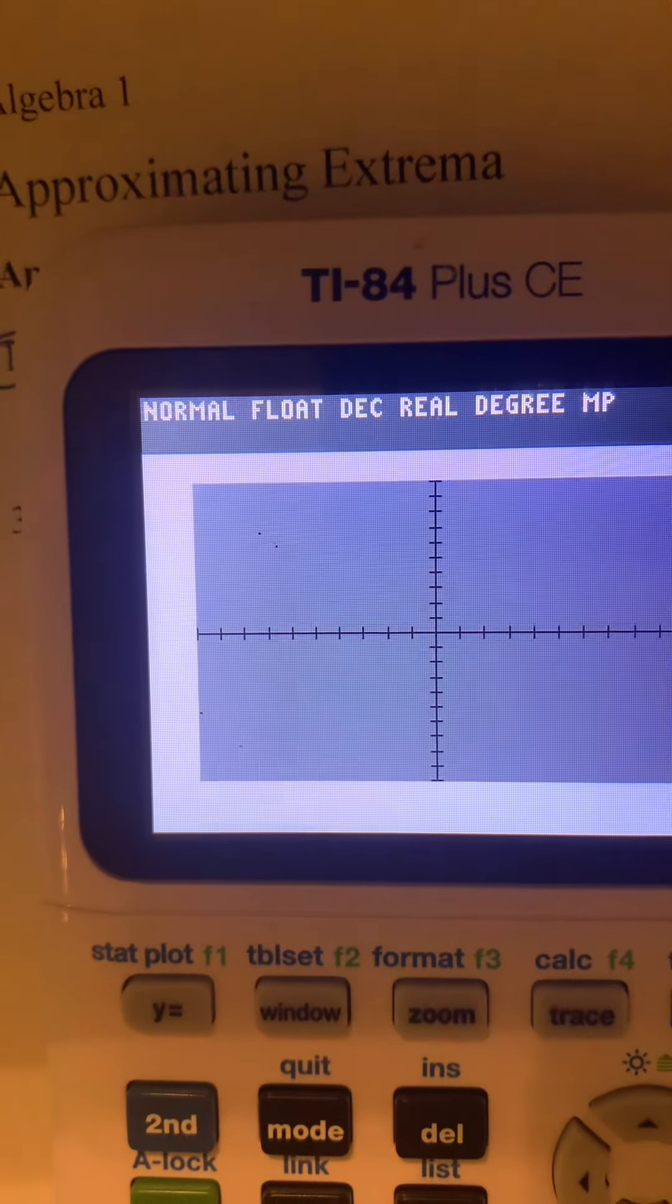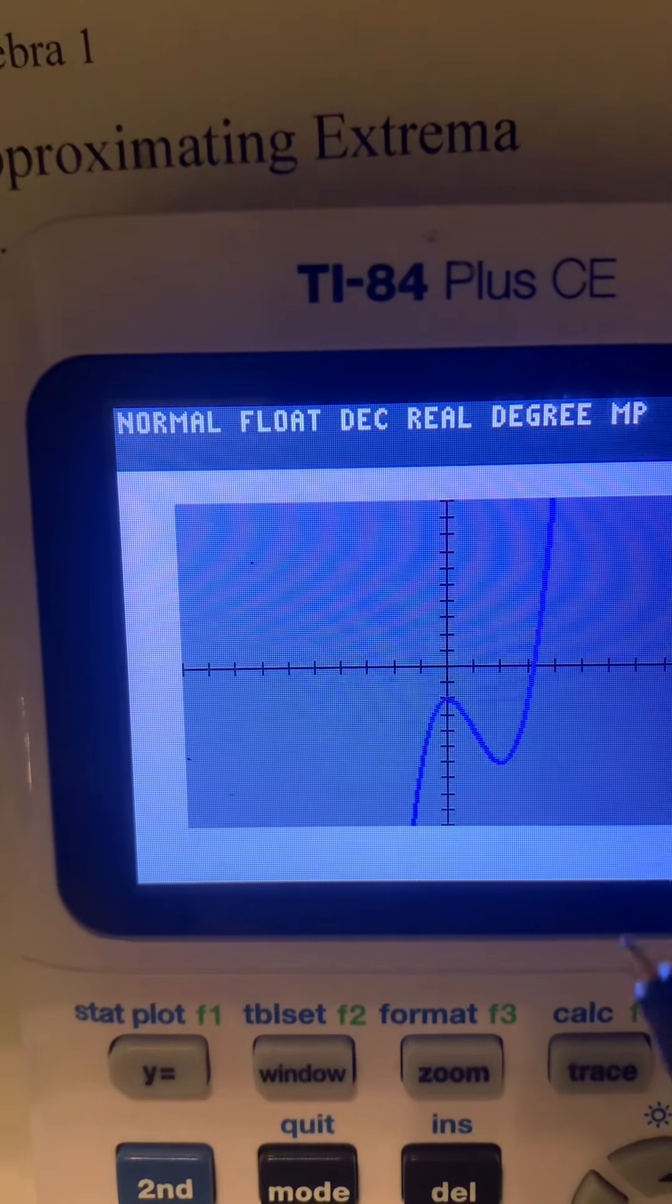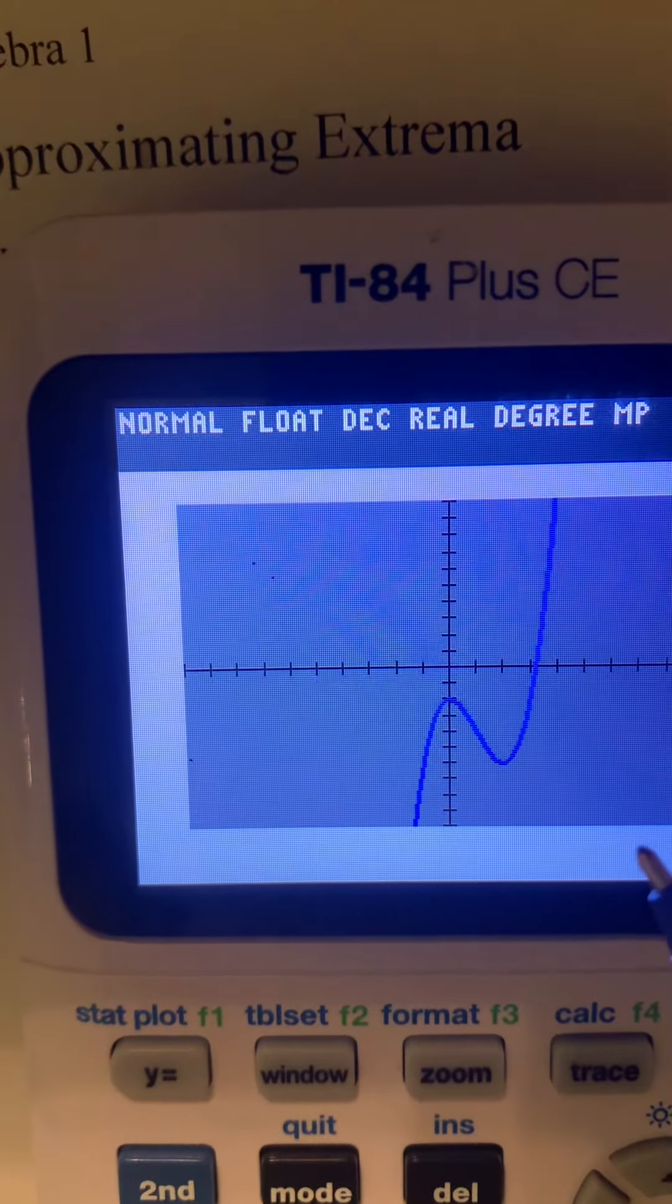The graph button is right here. If it doesn't take you to a normal screen, remember you can hit zoom 6. Zoom standard will take you to a standard screen. My screen was zoomed out a little bit. So I have a maximum here, and I have a minimum here. And this is all we're going to do is we're going to say maximum and minimum.